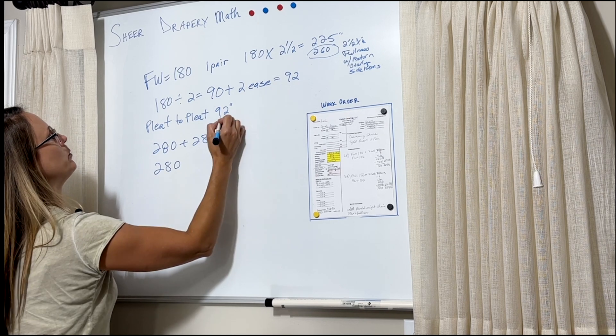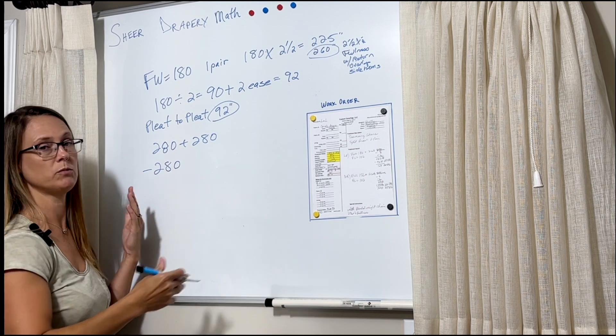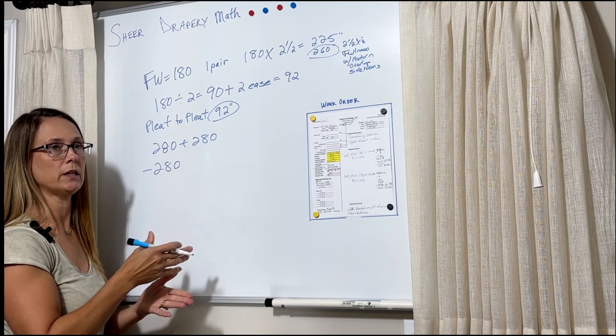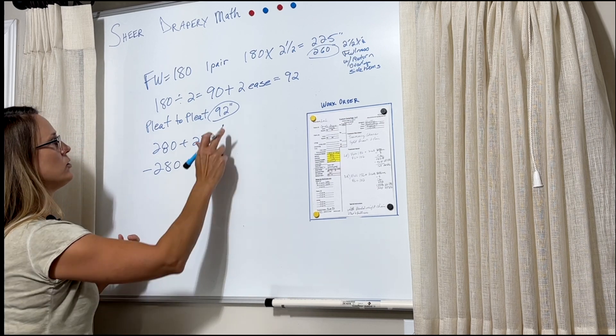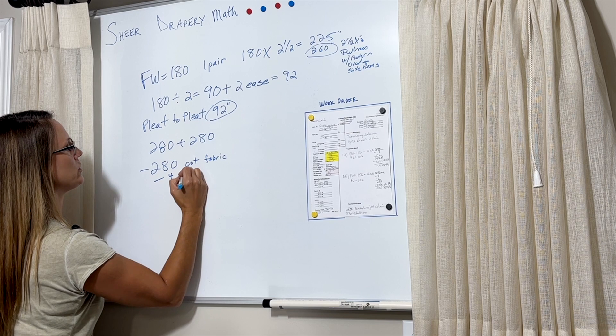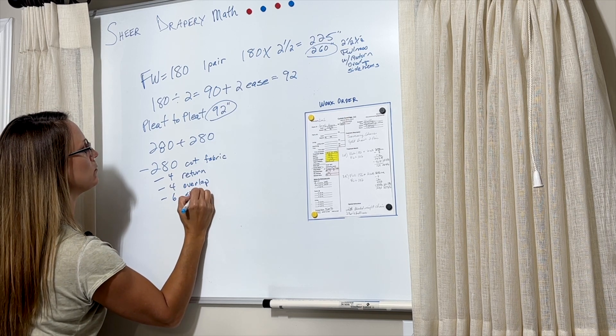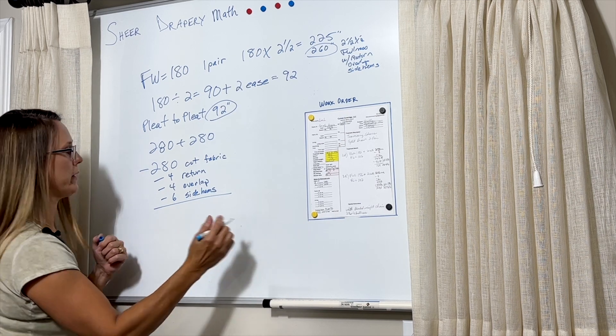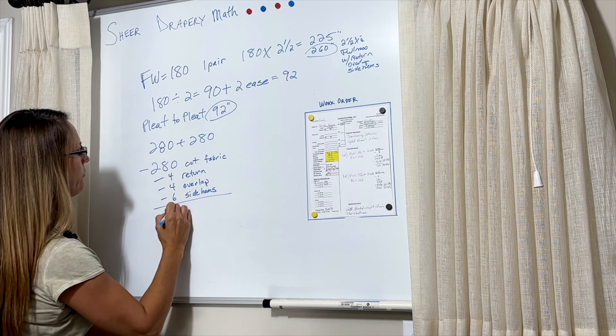We want the pleat-to-pleat to be 92. So we take our raw fabric cut and we railroad it, so there's no seams to worry about, which is nice. We don't have to worry about hiding the seams inside of a space. I like to put seams in spaces. So if we had seams, we would do five pleats per width. But in this case, we don't have to worry about that. So basically, I take my cut size, cut fabric, and we're going to take out 4 inches for the return, minus 4 inches for the overlap, and then minus 6 inches for the side hems. Because we want to know how much fabric we're going to be left with to figure out the pleats and spaces. So once we deduct all of that, 280 minus 14, we're left with 266.